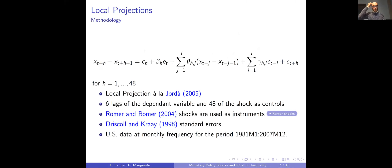We use a textbook instrumental variable local projection, in which the change in the dependent variable is regressed over the lag of the dependent variable itself, a measure of the monetary policy shock, and the lag of the monetary policy shock. In line with the literature, we use six lags for the dependent variable and 48 for the shock. Our results are completely robust to this specification. We use the Romer and Romer shock, and standard errors are corrected for serial correlation.